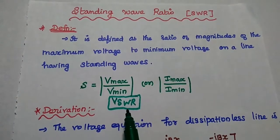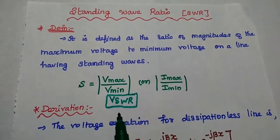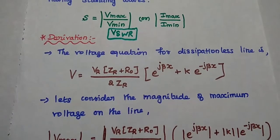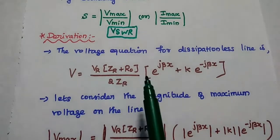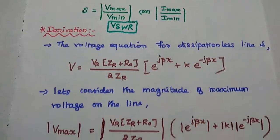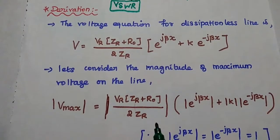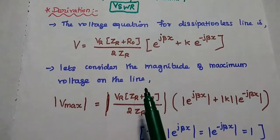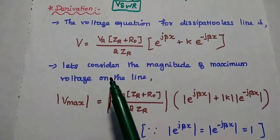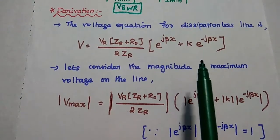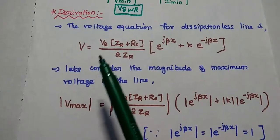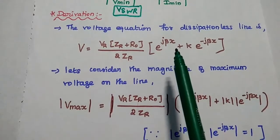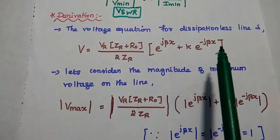In general, we are using VSWR as a measurement parameter. Next, we are going to derive the formula for this standing wave ratio. For that, we can use the voltage equation for dissipationless line. We have already derived the voltage equation for zero dissipation line in the previous lecture video, and we are going to use that equation directly here. The voltage equation for a dissipationless line is given as V equals Vr into Zr plus R-naught divided by 2Zr, into E-power J-beta-X plus K E-power minus J-beta-X.